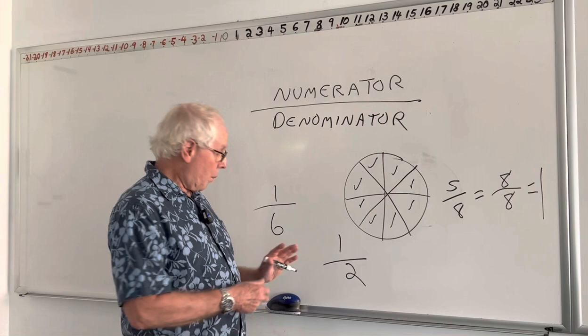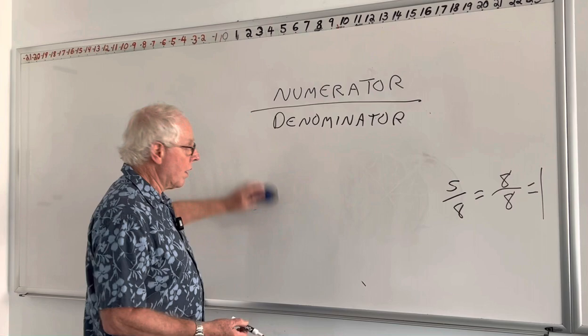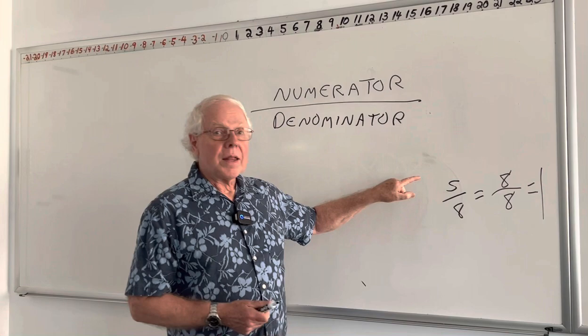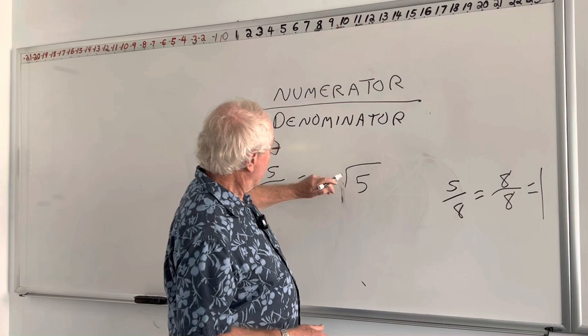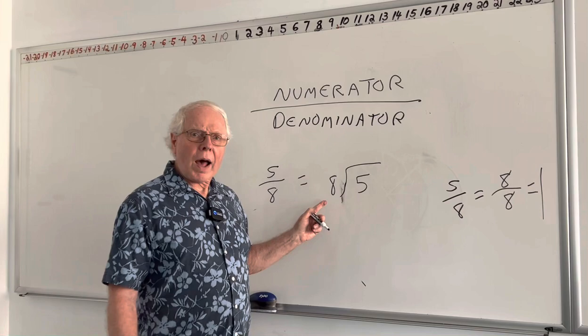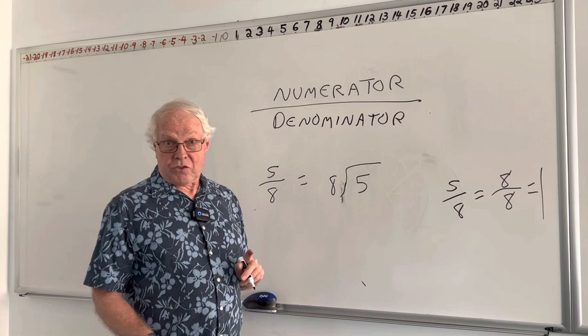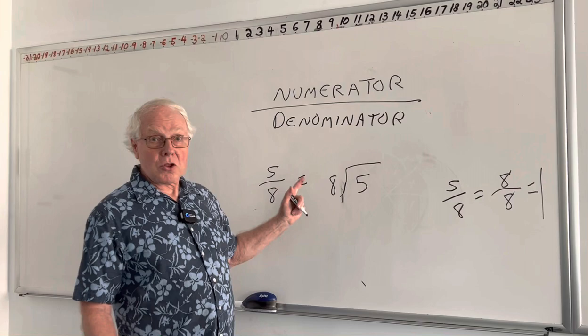In addition to being part of a whole or a probability, a fraction is always a division problem — meaning the numerator is being divided by the denominator. So the fraction 5 eighths means 5 divided by 8. You might say, well, that's impossible — 8 can't go into 5. But not all of it can go into 5; 5 eighths of it can. Part of this 8 can go into that 5. How much? 5 eighths of it.